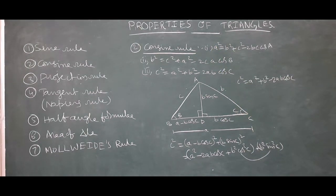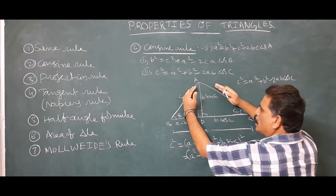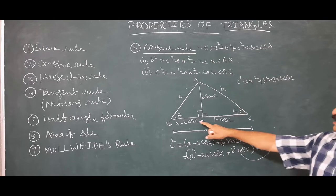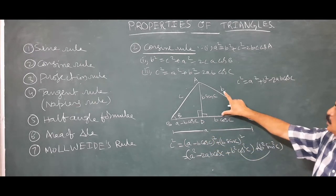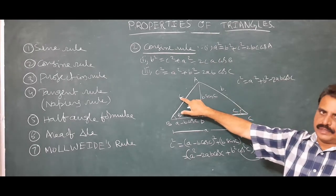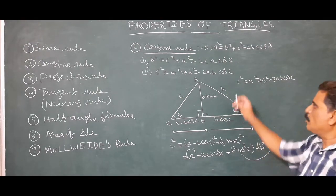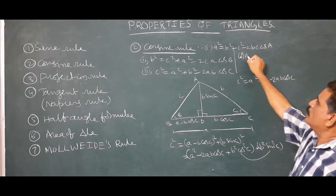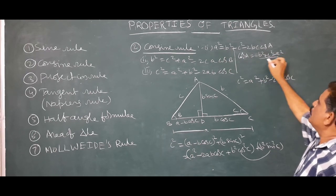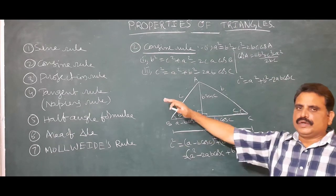Applications of the cosine rule: if two sides and the included angle are given, we can find the third side. Also, if three sides are given, we can find the angles. For example, cos A = (b² + c² − a²) / 2bc. So the cosine rule is proved.